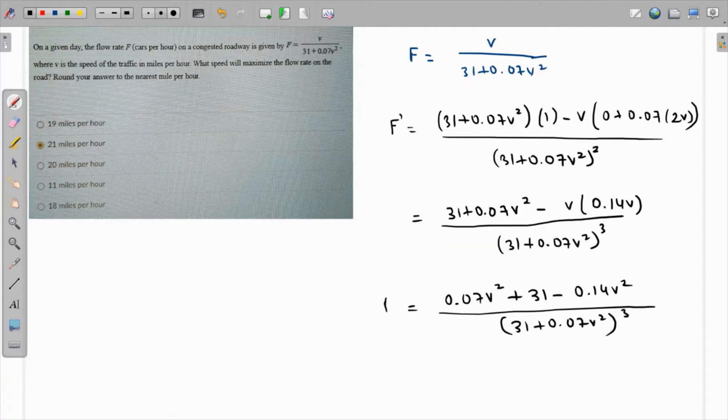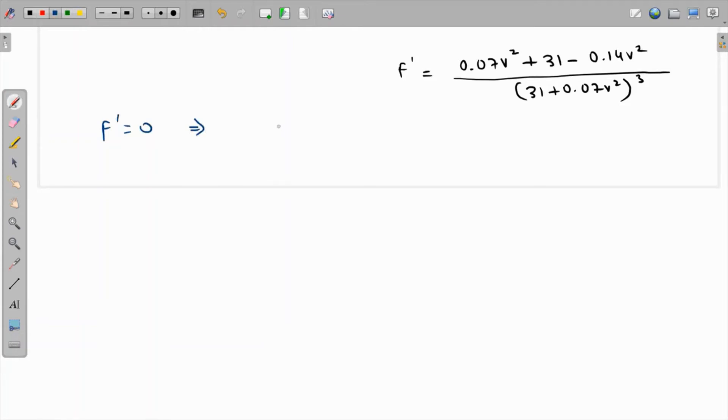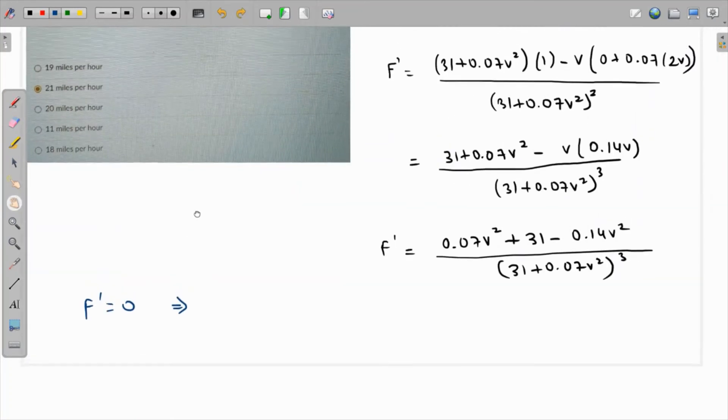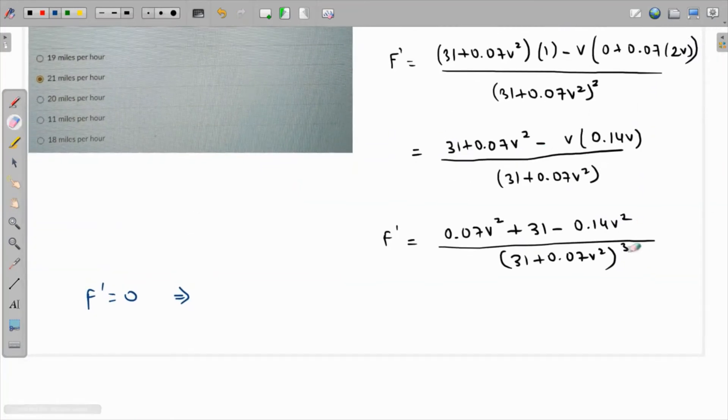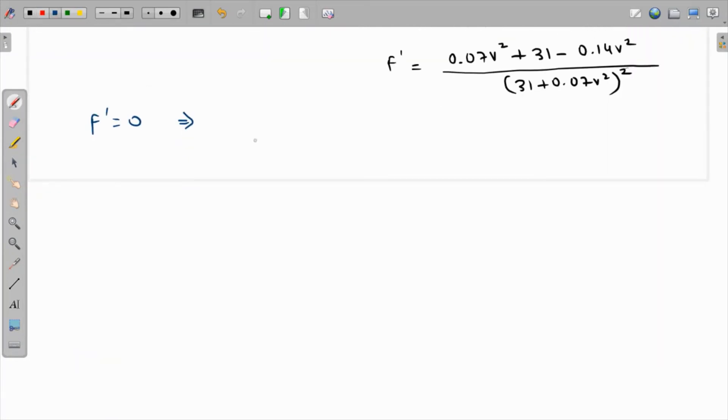We have to equate F' to 0 to get the critical points. I wrote cube over here by mistake; it's going to be square. F' when equated to 0 would mean that only the numerator will be 0.